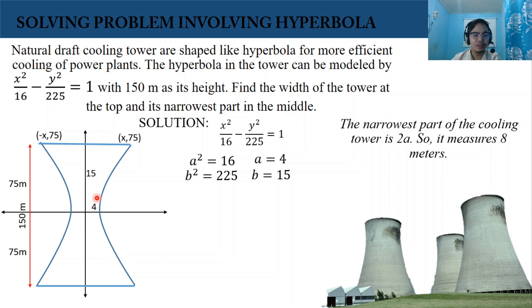Also, to the other side, we have x, 75. X is what we are finding here. Because if we're going to find the value of x from the center going to the x value, and we double it up, we're going to find the width of the tower at the top.